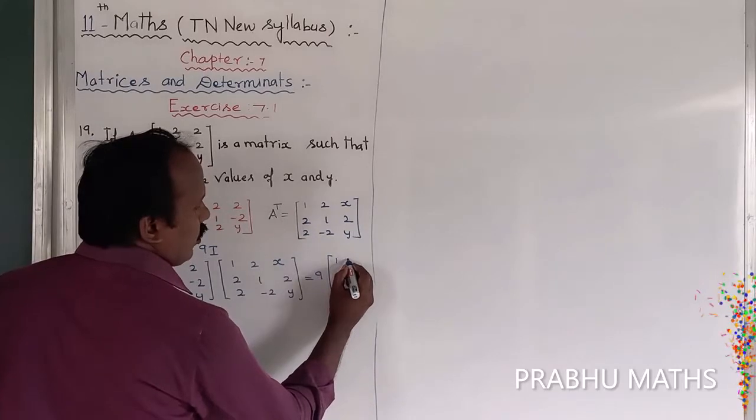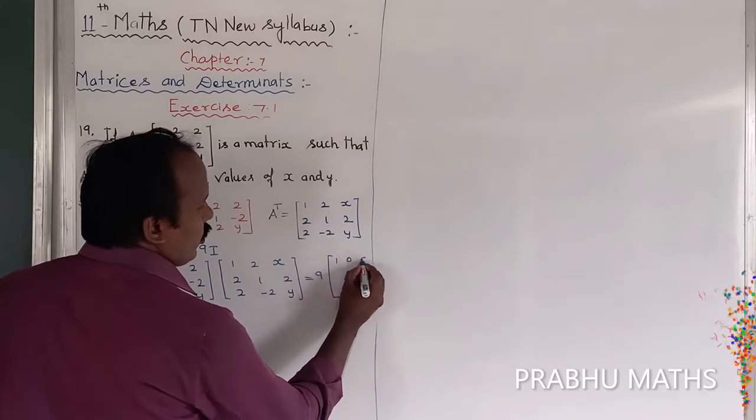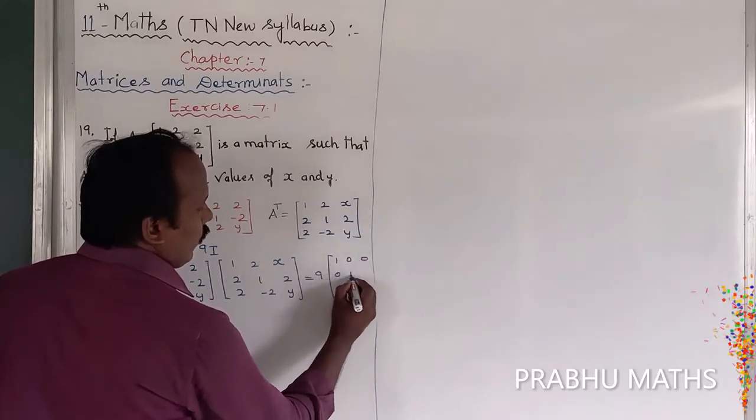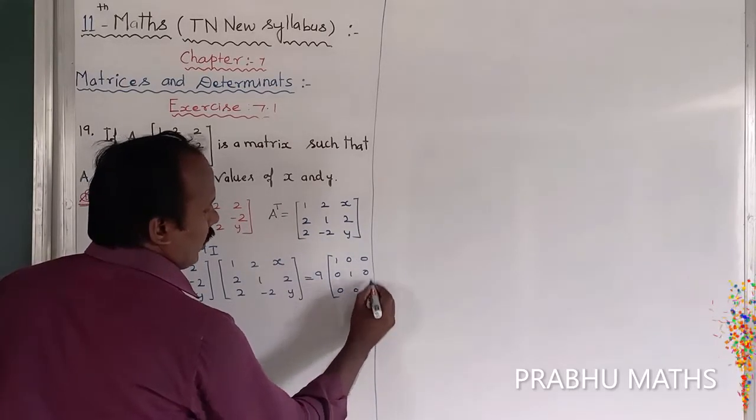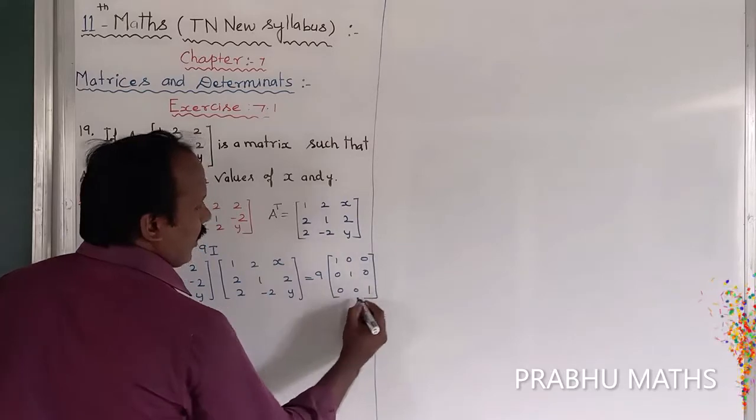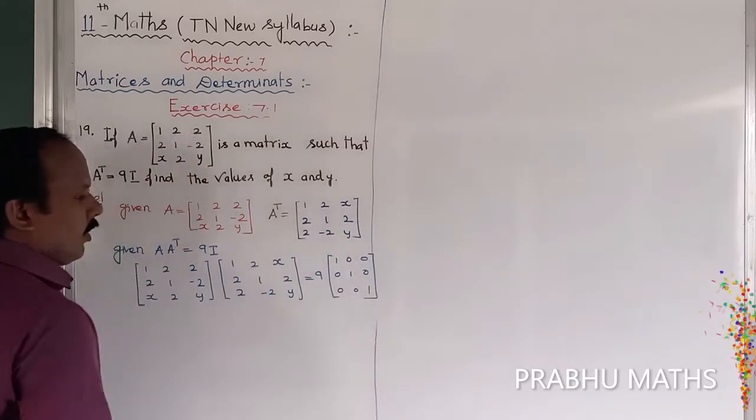This is a 3×3 matrix, so I is the 3×3 identity matrix: [1, 0, 0; 0, 1, 0; 0, 0, 1].